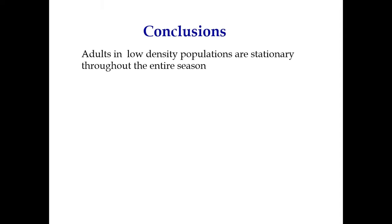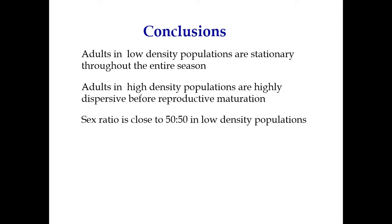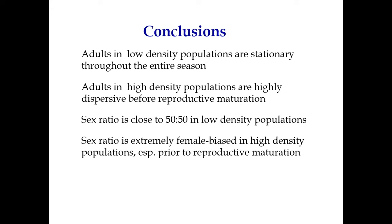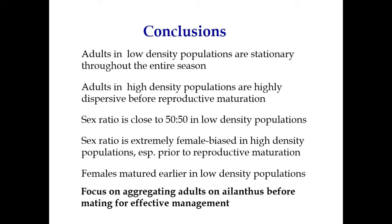In conclusion: low density populations show adults that are more stationary through the entire season, staying on short habitat. Whereas adults in high density populations are highly dispersant before reproductive maturation. Sex ratio is close to 50/50 in low density populations, whereas sex ratio is extremely female biased in higher density populations, especially before reproductive maturation. Females mature earlier in low density populations. I strongly suggest that effective management efforts should focus on aggregated adults before mating.